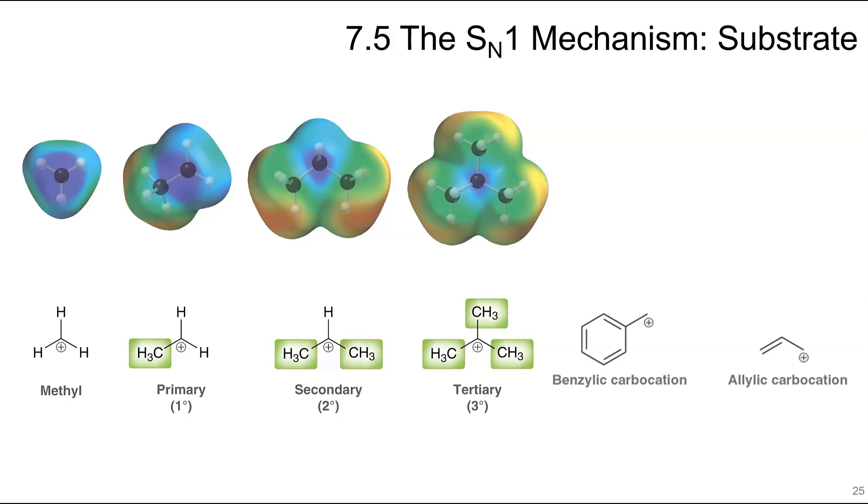In SN1 reactions, a carbocation will form more quickly if it can stabilize itself. So if you have a tertiary carbocation, this can be supported by all of these surrounding neighbors through induction. And that's going to be more stable than a secondary carbocation, which is more stable than a primary, which is more stable than a methyl. The benzylic and allylic carbocation are stabilized by resonance. So if a carbocation can form and be stabilized, then it will form more quickly.